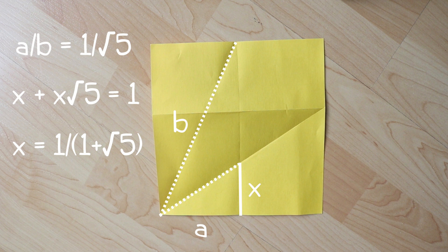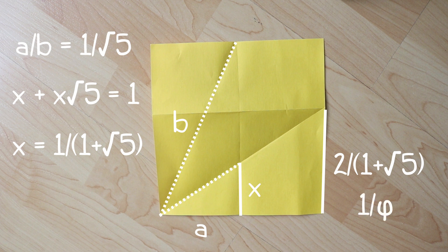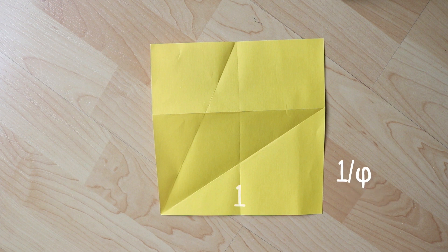Using similar triangles, we find that the length of this segment over here is 2 over 1 plus root 5. Look familiar? It's the reciprocal of the golden ratio. Multiplying both segments by the golden ratio confirms that we've folded a golden rectangle.